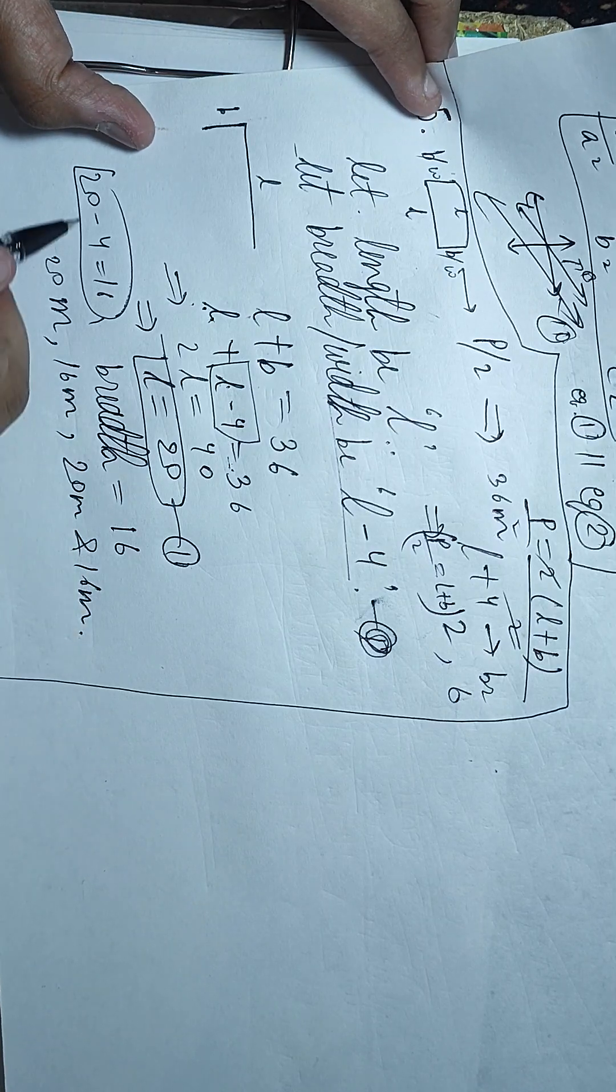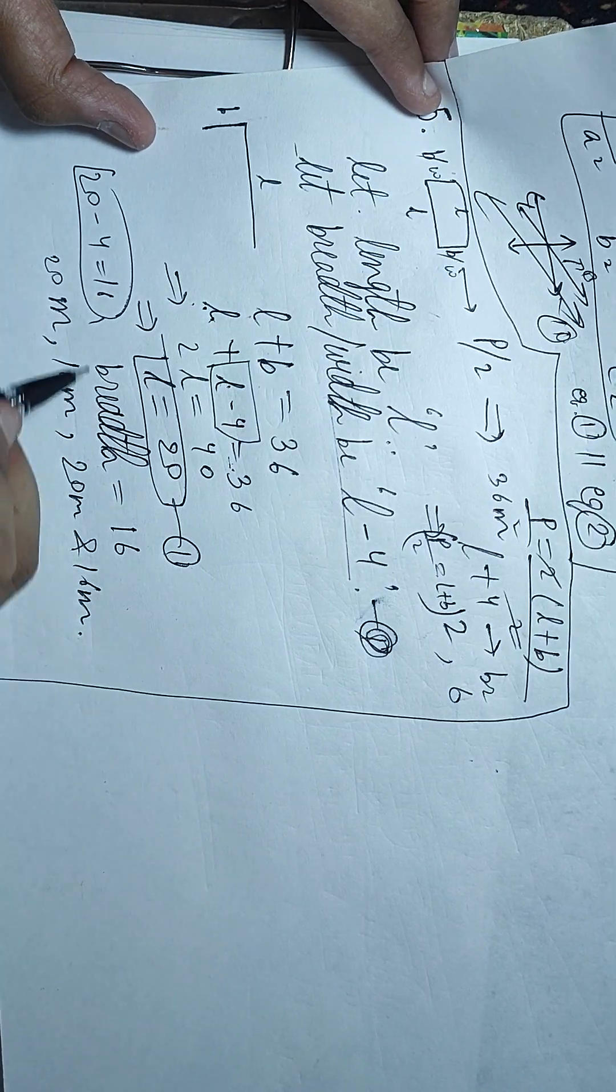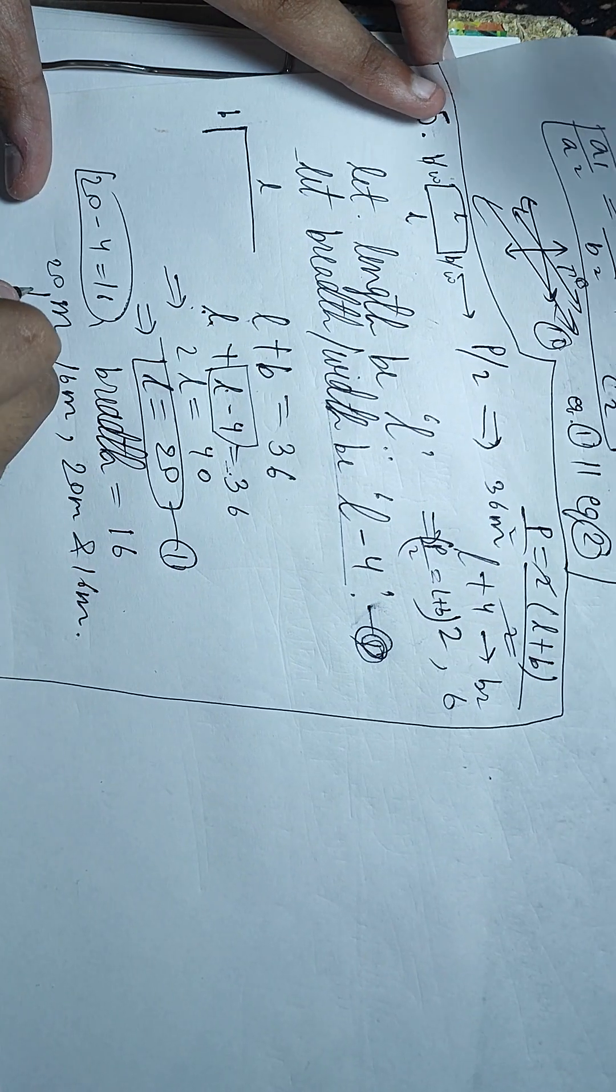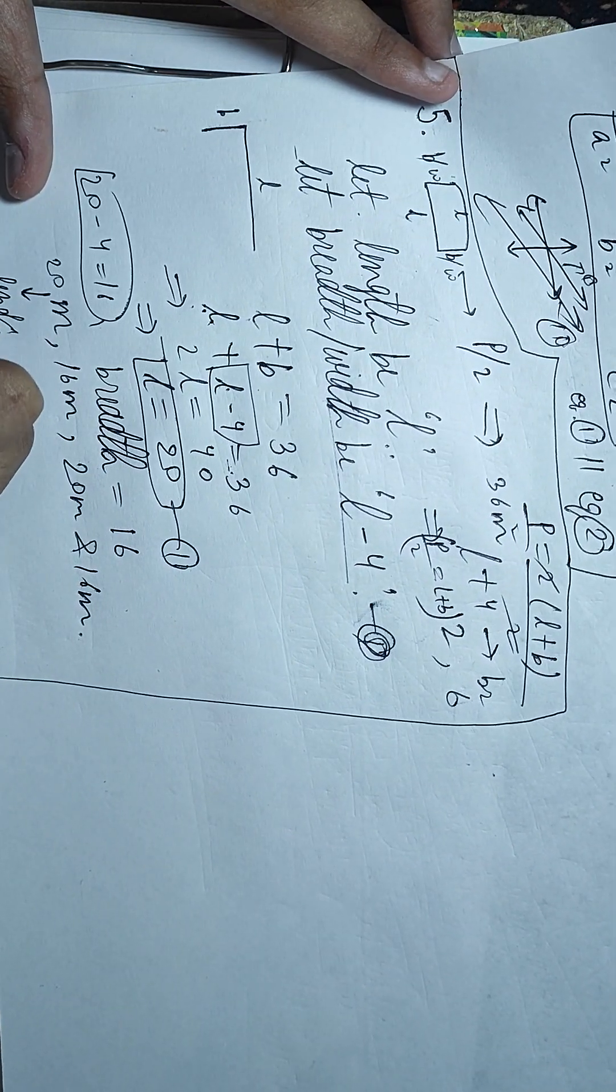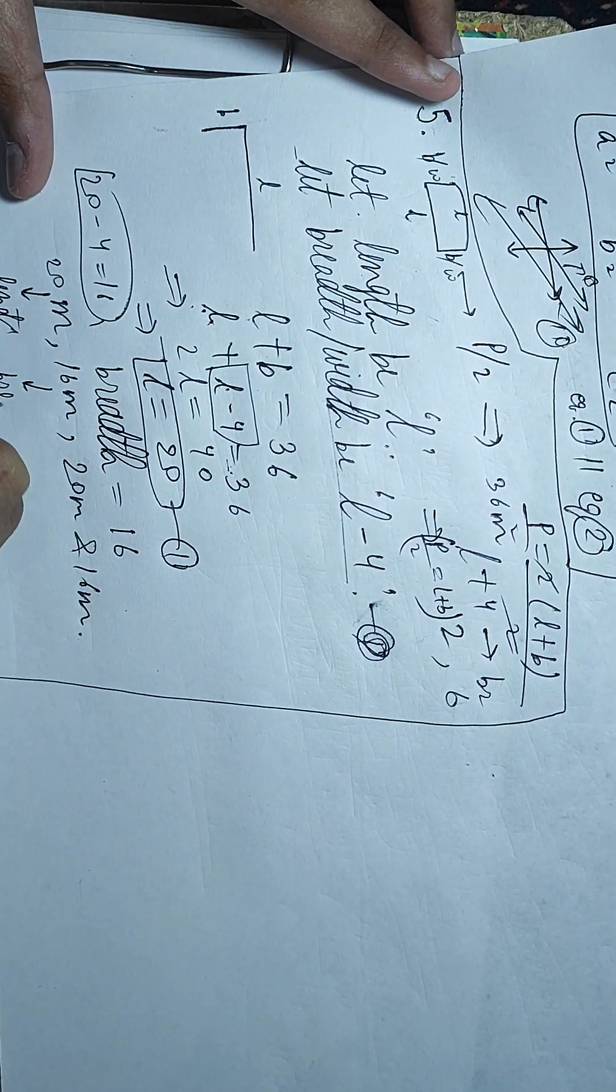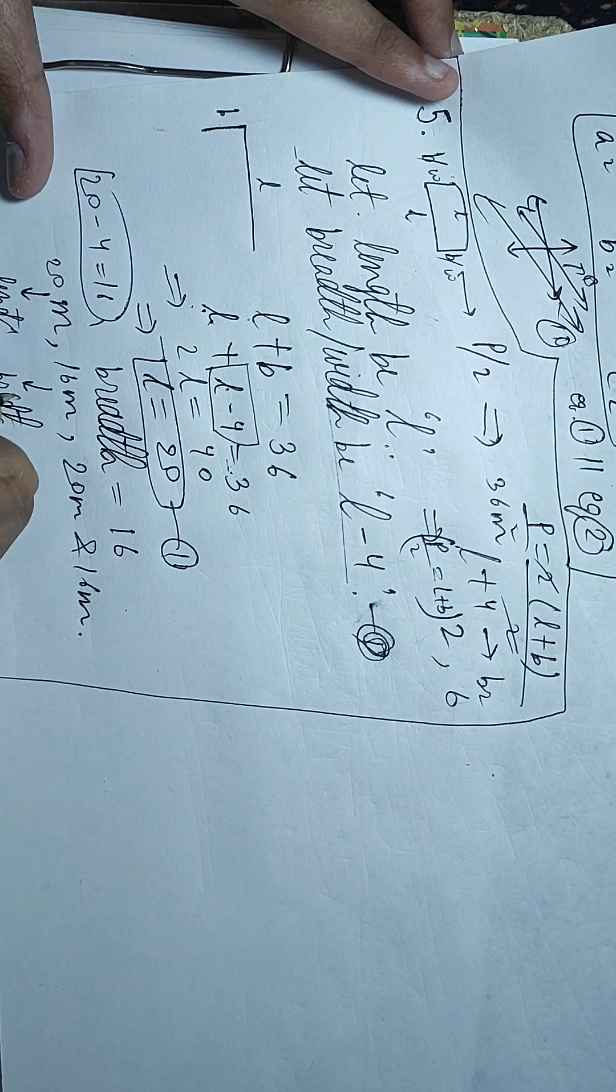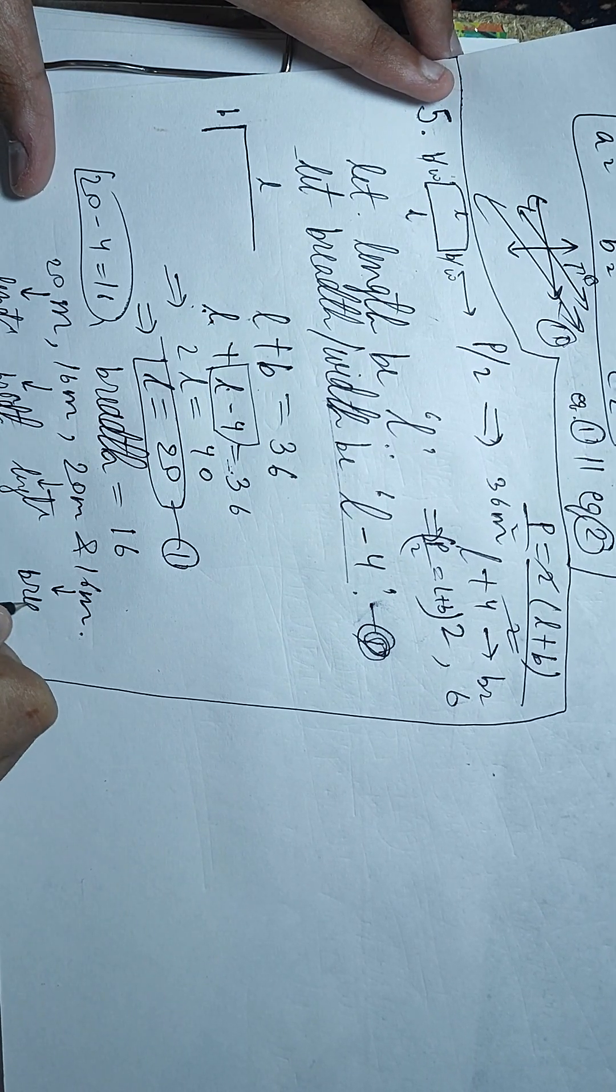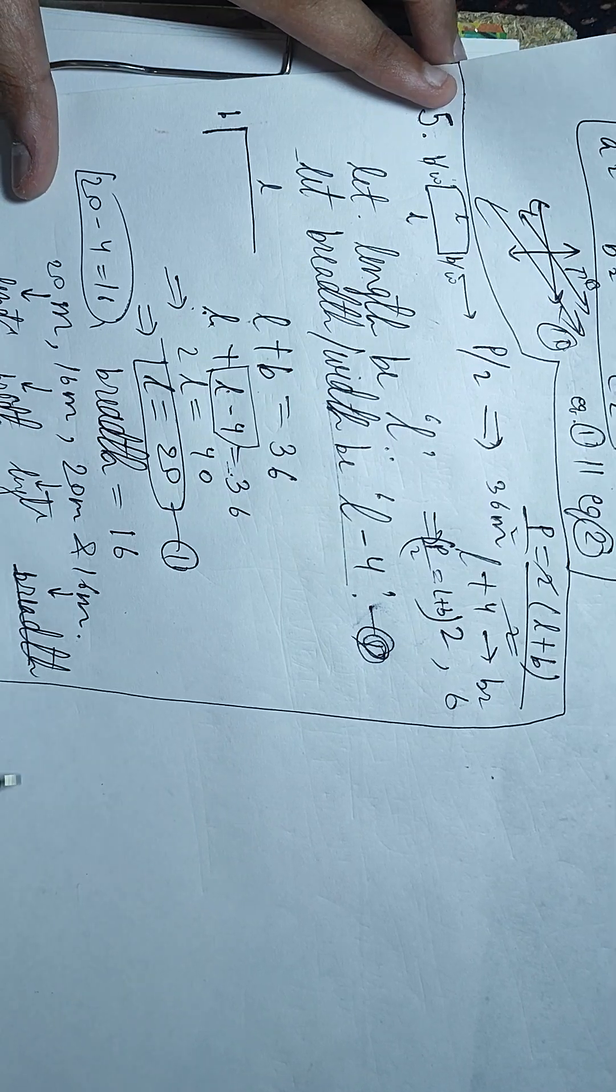L is equal to 20, so length is equal to 20 and breadth is equal to 16. 20 minus 4 is equal to 16. So these are all dimensions: this is your length, this is breadth.